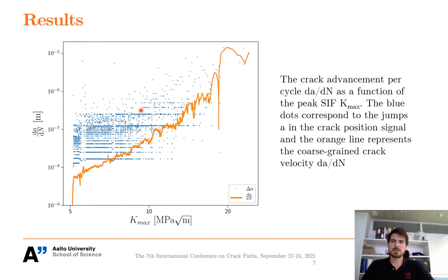Another direction would be to study the crack advancement jumps. Here, a jump delta A is defined as the advancement of the crack between two images divided by the number of cycles between these images. This mirroring of the observed jumps are over the time interval between images serves just to compare the jump size with the coarse grained crack velocity. We emphasize this difference between jumps in the crack position delta A and the coarse grained crack velocity dA over dN by using different notation. Here on the figure shows this difference for a single experiment as a function of K_max.